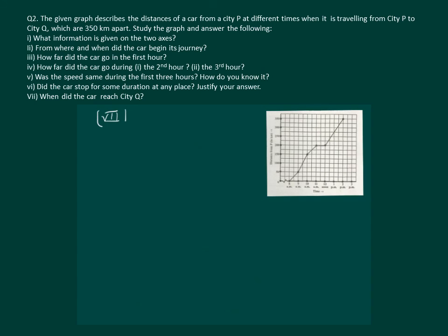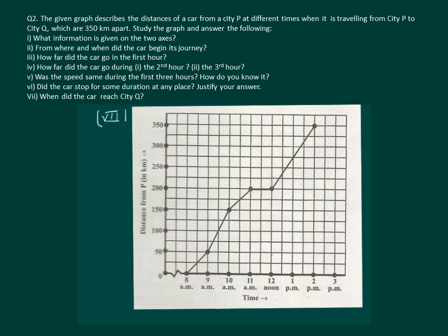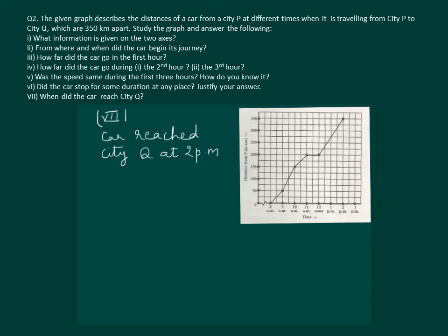Let us read the seventh part: when did the car reach city Q? We know that city Q was 350 kilometers from city P. So we will see at what time the car reached 350 kilometers distance. Looking at the corresponding time on the graph, we find that at 2 p.m. the car reached city Q. Hence, the car reached city Q at 2 p.m.